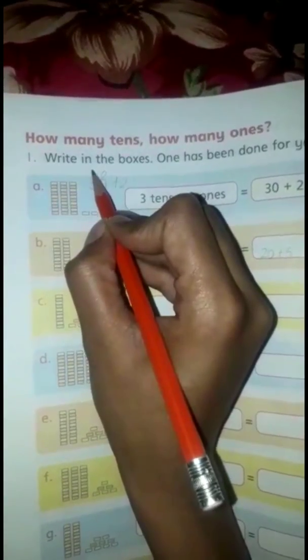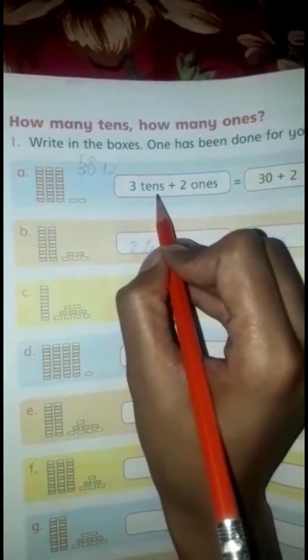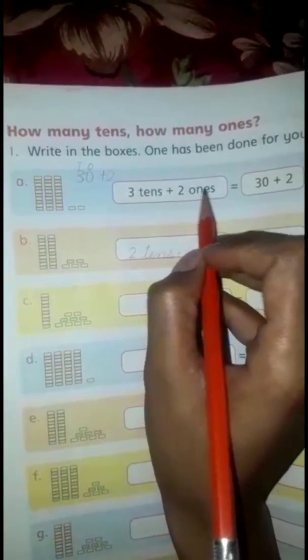Ones comes in the ones place. You will see that the three is in the tens position. You will write three tens plus two ones.